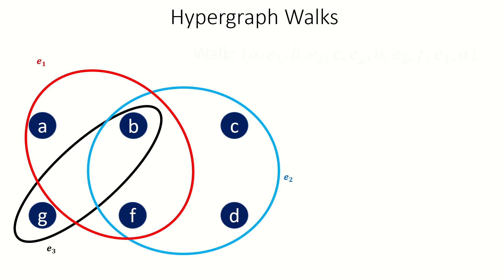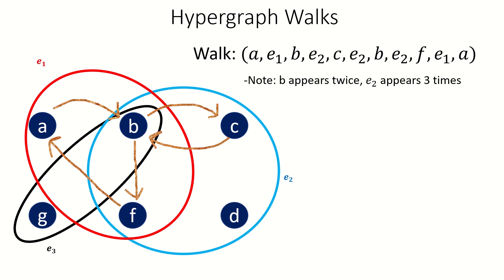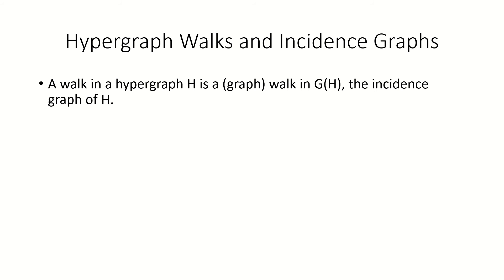Here's an example of a walk in a hypergraph. In this example, our walk is closed because it started and ended with vertex a. Note that we visited edge e_2 three times and vertex b twice.